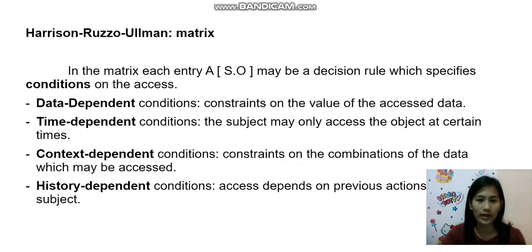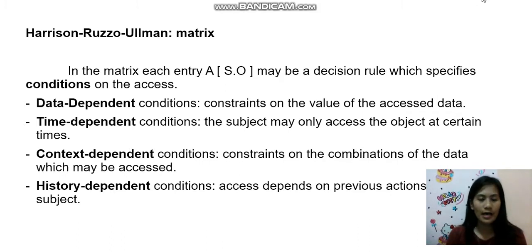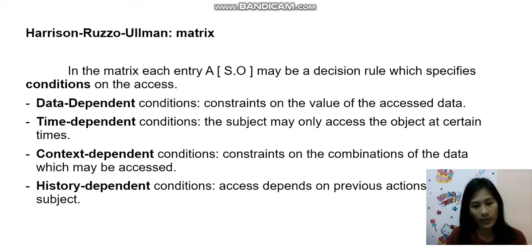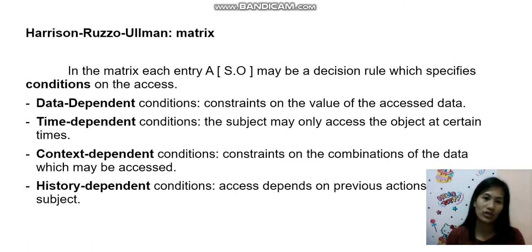The data dependent condition constrains on the value of the accessed data — it means the data dependent on the data that you imported gives you a value to access. The time dependent condition is limited because access is dependent on a certain time. Context dependent is restricted by the combinations of the data which can be accessed. And history dependent is based on the previous data that you imported.